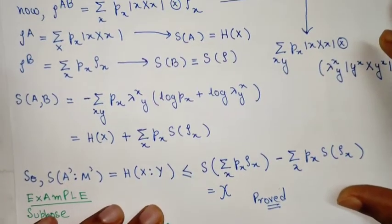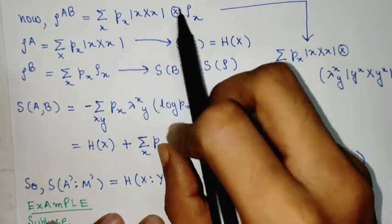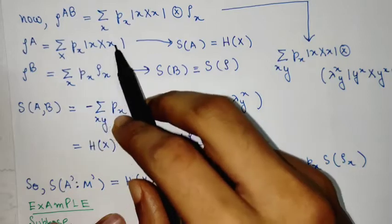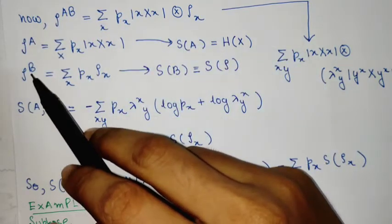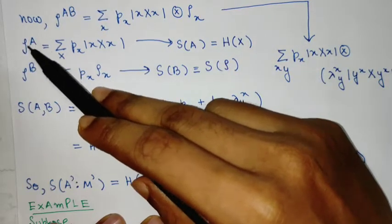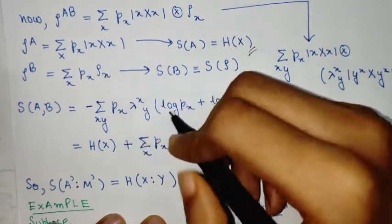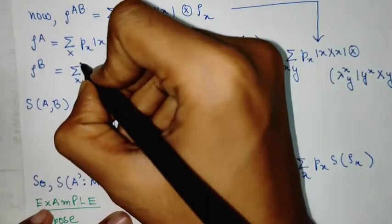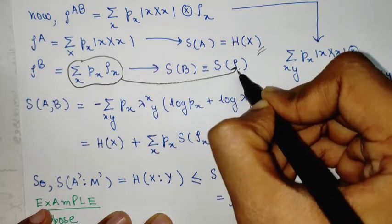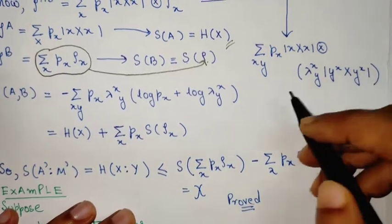Suppose rho_{AB} is given such that Alice performs measurement and supplies the state to Bob — these are called classical-quantum states. Tracing out B gives rho_A. The entropy of rho_A is simply the Shannon entropy because it is a classical state, and the entropy of rho_B is S of rho, where rho is the full mixture. To calculate S(AB), we perform a spectral decomposition of rho_x.